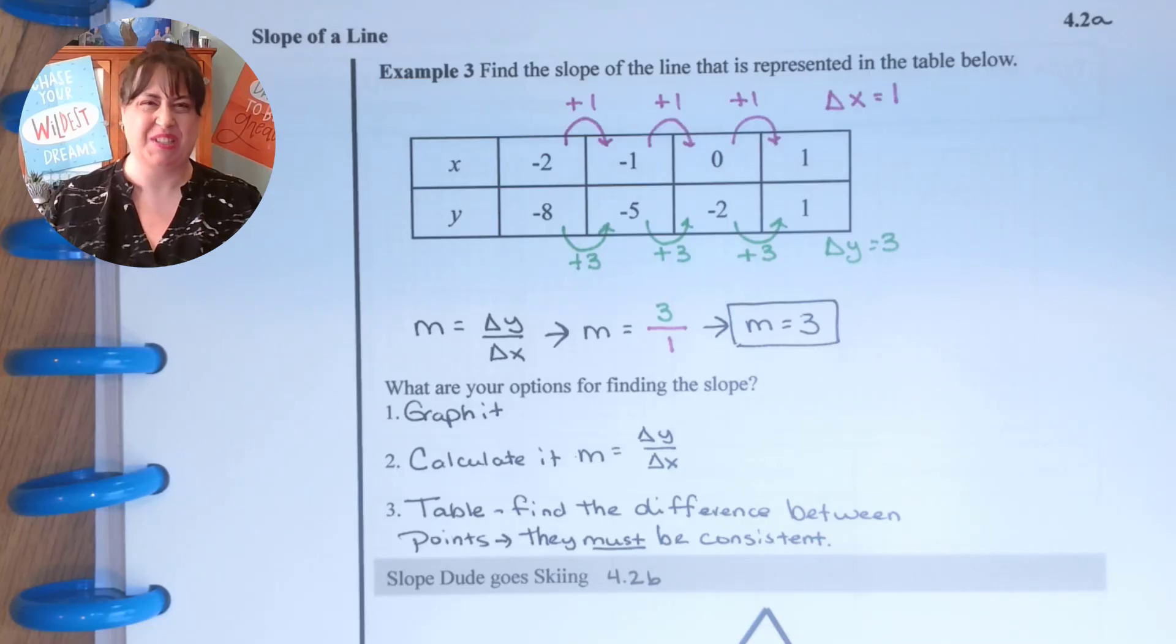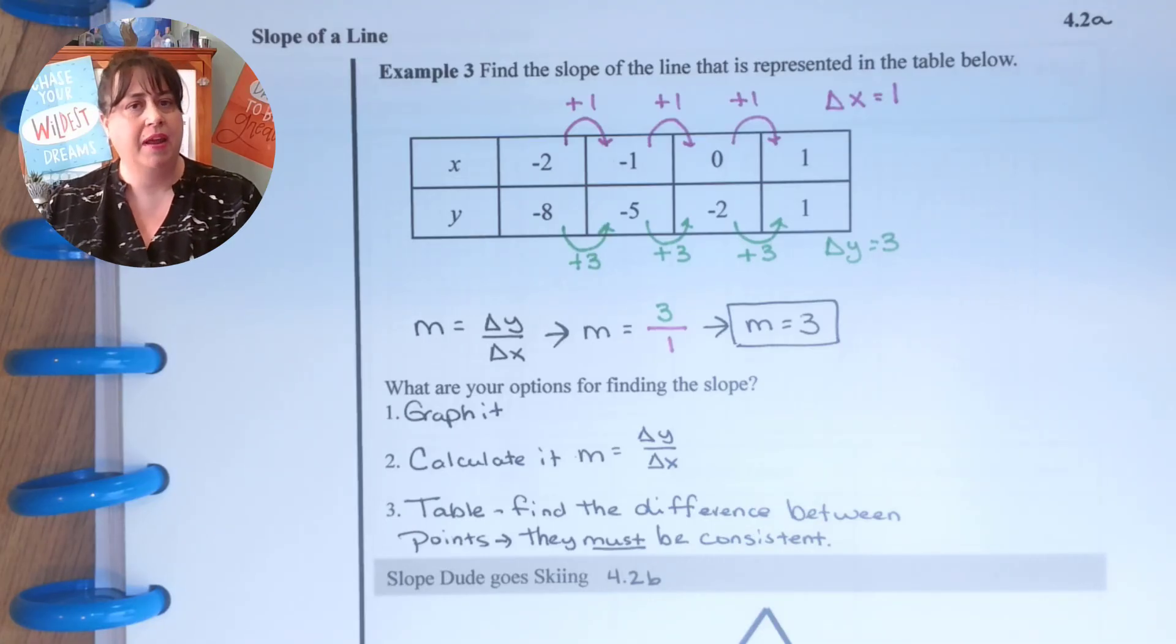So that is it for today. That is slope. The slope tells us how fast the line changes and the direction that it changes in. We already know how to find the slope based on some previous work we did in class, but if you didn't know that, you know it now.